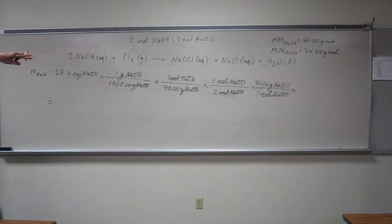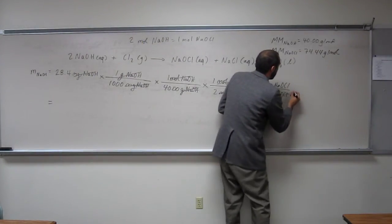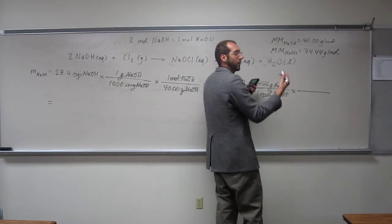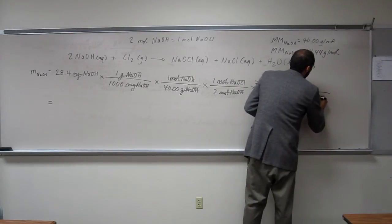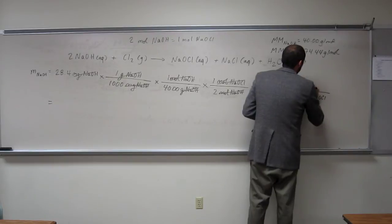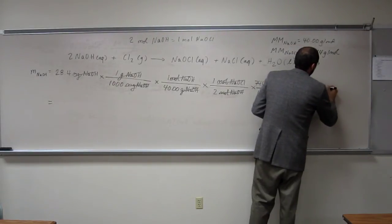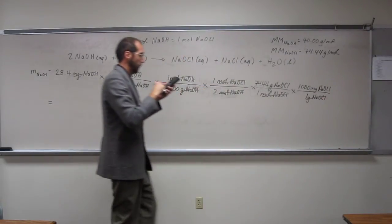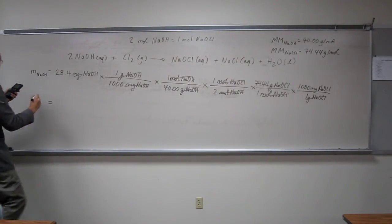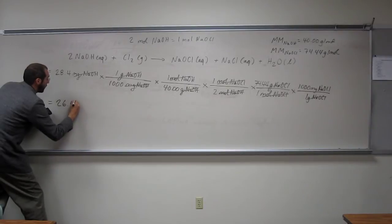So all we do is just go across and divide. So 28.4 divided by 1,000, divide that by 40, divide that by 2, and then multiply that by 74.44. And well, this is in grams. Why don't we convert that to milligrams? So we'll get a number that is a little more presentable. Let's just convert it to milligrams for fun. So one gram of sodium hypochlorite is 1,000 milligrams. So we're going to take that number and multiply it by 1,000. And I get a number that is 26.50.